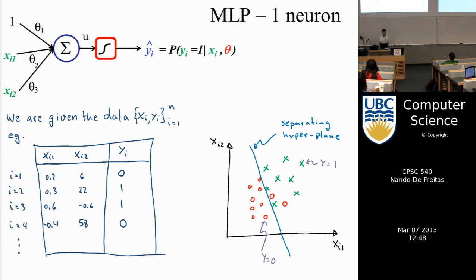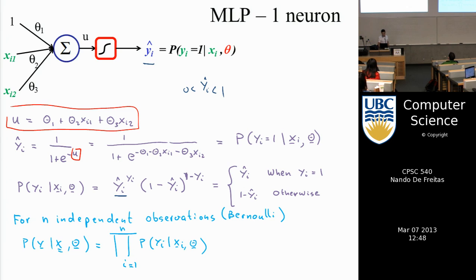We're after learning the parameters, because if you know the parameters you know the line. The single neuron takes the inputs plus a bias term, weights them by theta, sums them up to produce signal u. So u is a linear combination: theta1 times 1, plus theta2 times x_i1, plus theta3 times x_i2.